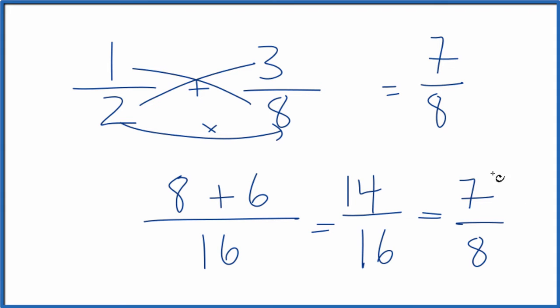So we get the same answer, seven-eighths. When you add one-half and three-eighths, you get seven-eighths. This is Dr. B. And thanks for watching.